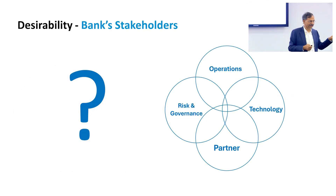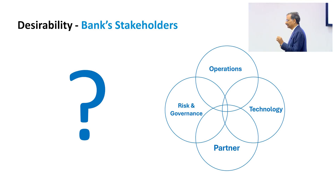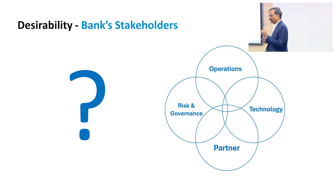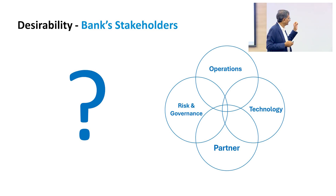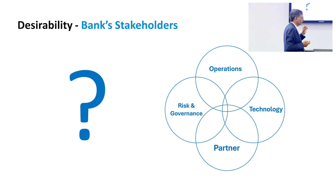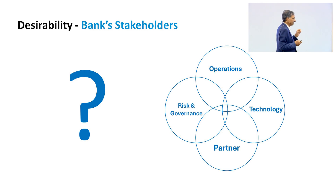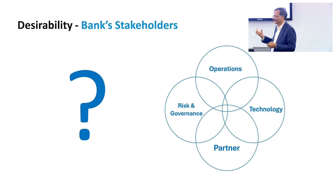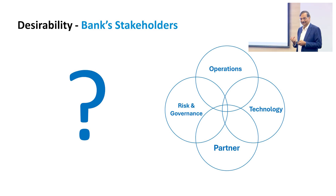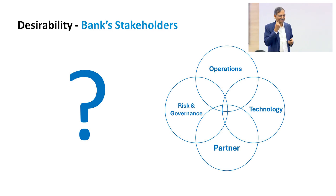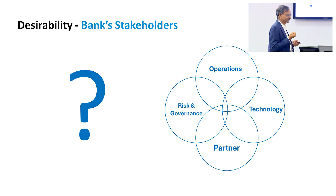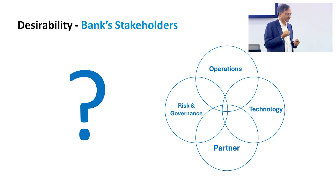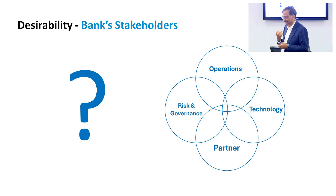Now, bank stakeholders are also there — there is desirability for the stakeholders. Who are the stakeholders? There is the operations team in the bank, the risk and governance team, the technology team, and the partners of the bank. We need to look at each of these and ask: what is the desirability of the technology team? They want to be able to sleep on time. They should not have end-of-day processing running till 12 o'clock at night. That is their desirability.